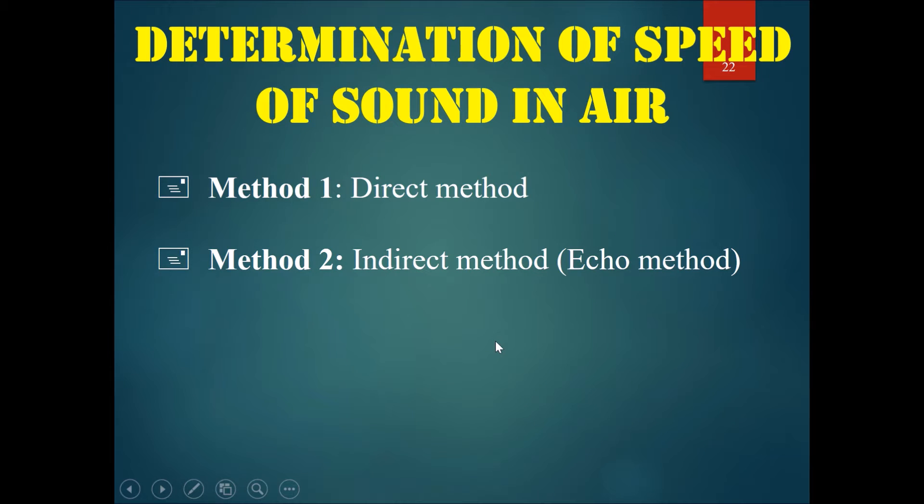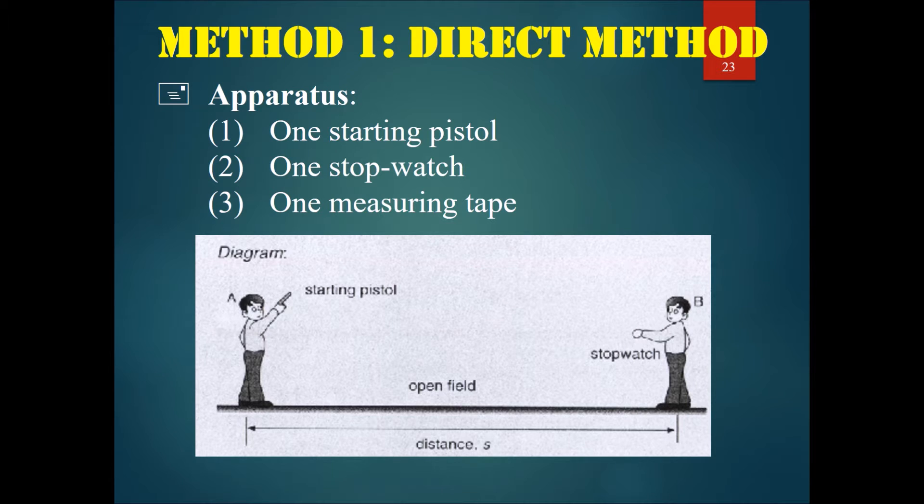Let's talk about the determination of speed of sound in air. There are two methods: one is the direct method and one is the indirect method or the echo method.